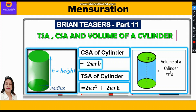Curved surface area of a cylinder, as we know, is circumference of the base into height, so it is 2πrh. Total surface area of the cylinder is the sum of the area of the two circular bases — the top and the bottom — plus the curved surface area.